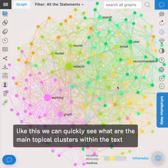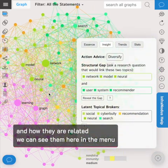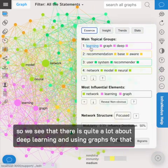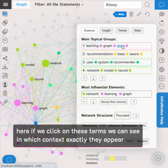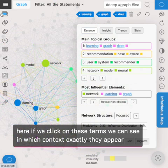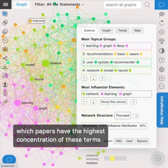Like this, we can quickly see what are the main topical clusters present inside the text and how they're related. We can see them here in the menu. So we see that there is quite a lot about deep learning and using graphs for that. Here, if we click on these terms, we can see in which context exactly they appear, so which papers have the highest concentration of these terms.